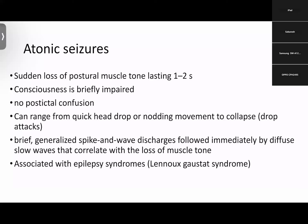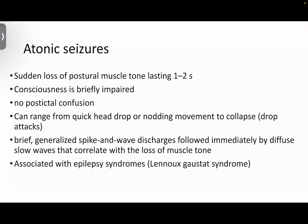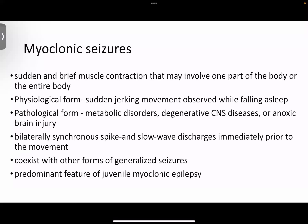As the name suggests, atonic seizures involve sudden loss of postural muscle tone lasting one to two seconds. Consciousness is briefly impaired, and there is usually no postictal confusion. They can range from a quick head drop or nodding movement to complete collapse — what we call drop attacks. The EEG shows brief generalized spike-and-wave discharges followed immediately by diffuse slow waves that correlate with the loss of muscle tone.